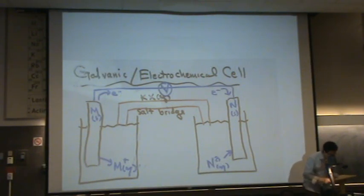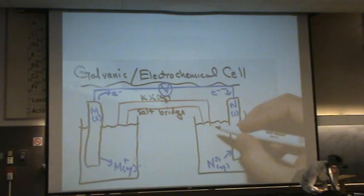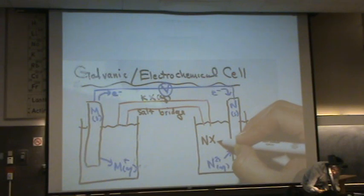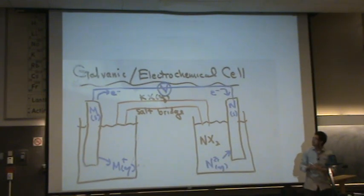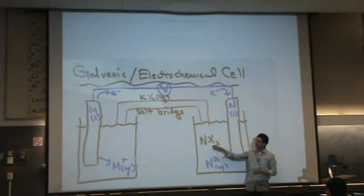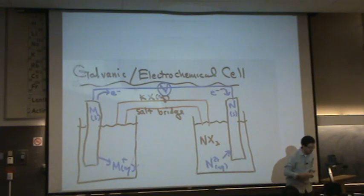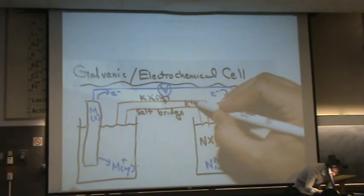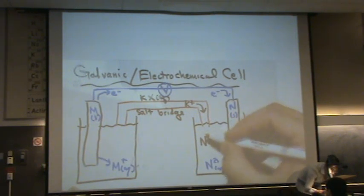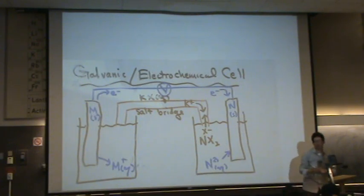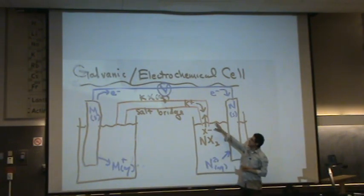So we'll do a KX like potassium chloride is a common one. And what's going to happen, say on the right hand side over here, you don't just have N but you have like NX2 because you need some counter ion here. But when the N2 plus plates onto the metal, you're going to have a lot of X left over. What happens to that X? Well, the K plus from the salt bridge travels this way, and the X minus that's left over travels up here and they meet in harmony and love in the salt bridge or somewhere in this direction.